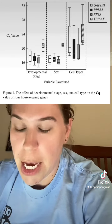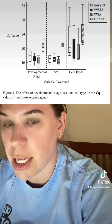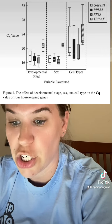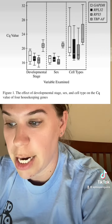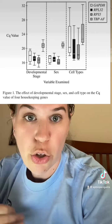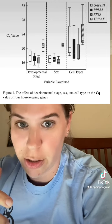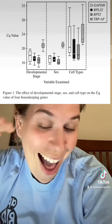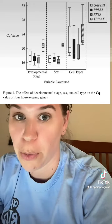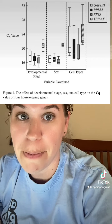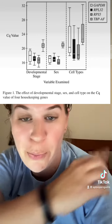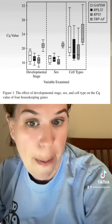Part B gives a little bit of background and tells us that the CQ value is inversely proportional to the amount of mRNA of the gene. Based on the data, identify the gene that has the lowest level of gene expression regardless of variable. Because it's inverse, I want the highest number. Which of these has the highest in every single variable? That would be TBPAF. It has the highest CQ value, which means it has the lowest mRNA.